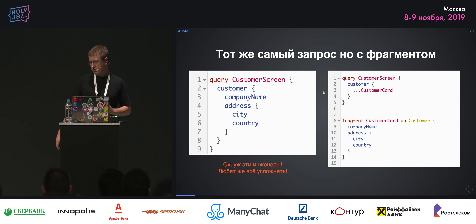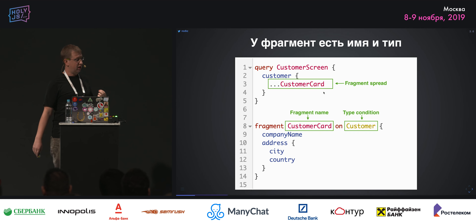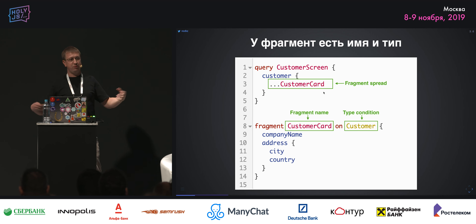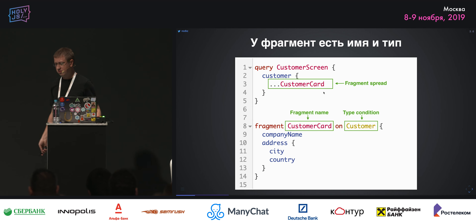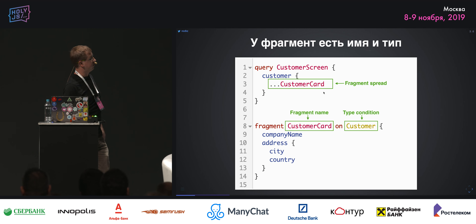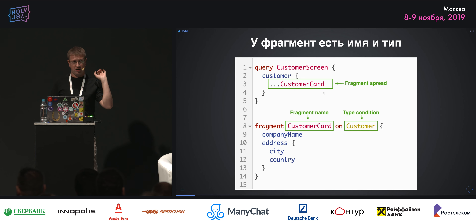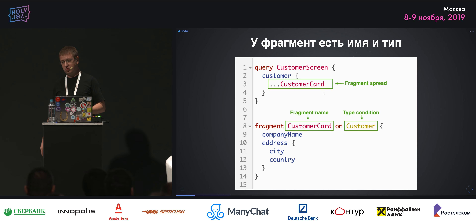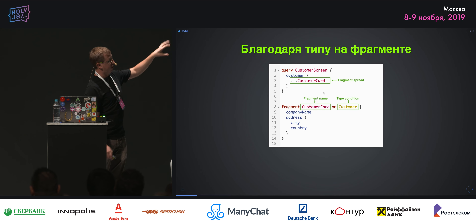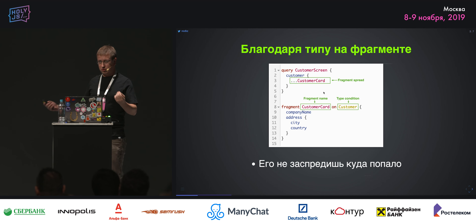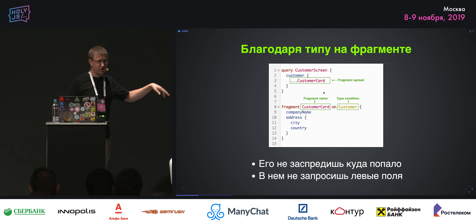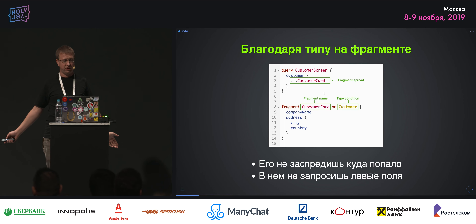Это одна из функциональных обязанностей фрагмента. У фрагмента есть обязательно имя, например customer_card, и он делается на серверном типе, например Customer. То есть сервер возвращает нам заказчиков, и мы можем в разных ипостасях его отображать, запрашивая некоторые фрагменты данных. Запрашиваем это через fragment spread — мы в нужное место запроса ставим фрагмент, чтобы он автоматически подставил туда поля. Благодаря типу on Customer нельзя заспредить фрагмент куда попало — он чётко валидируется, нельзя запросить ненужные поля.